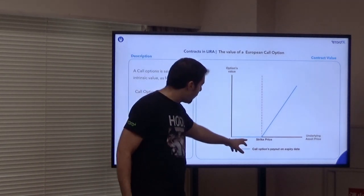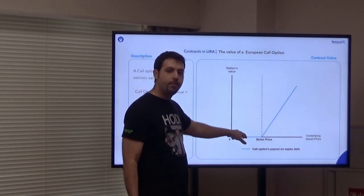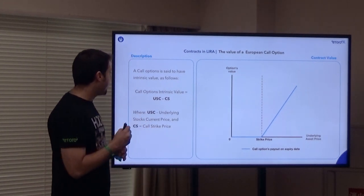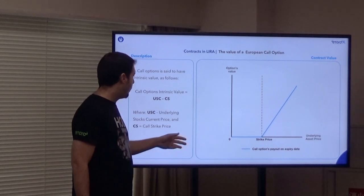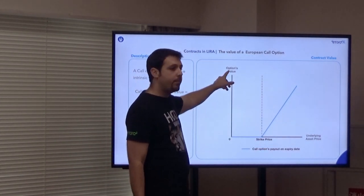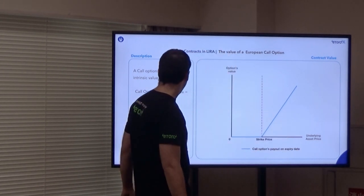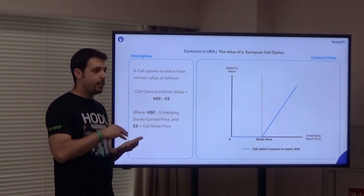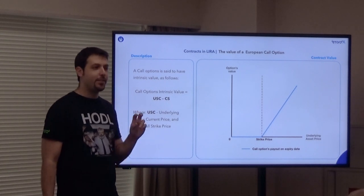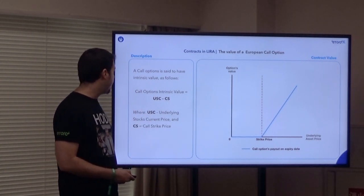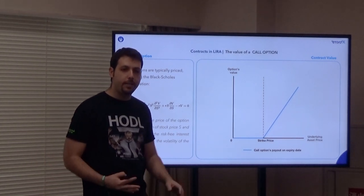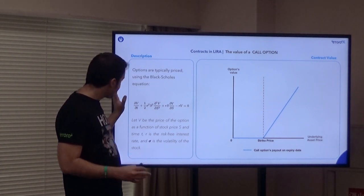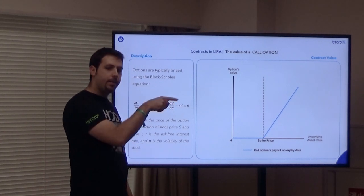A lot of people use the hockey stick diagram for options — before the strike price, the option is worth zero. Over that, it starts going linearly at 45 degrees — one dollar increase per dollar increase in the underlying. The call option value is any value over the strike price at maturity. We looked at the intrinsic value, which tells you what the option would be worth if you exercised it straight away. You can also use Black-Scholes or other implied volatility models to price it, but we won't cover that today.